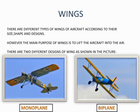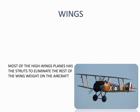There are different types of wings of aircraft according to their shape, size, and design. However, the main purpose of a wing is to lift the aircraft into the air. There are two different designs of wings as shown in the pictures. The aircraft with one wing is called a monoplane, and the aircraft with two wings is called a biplane.